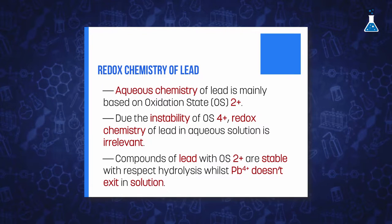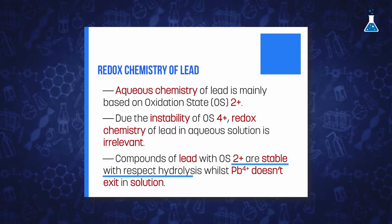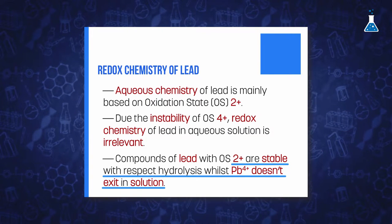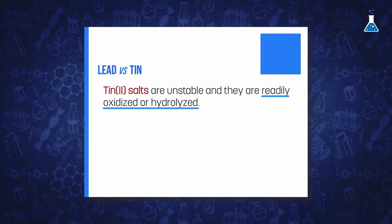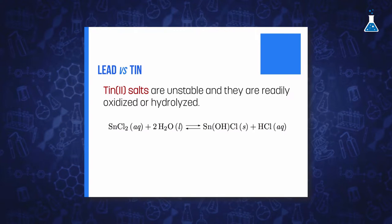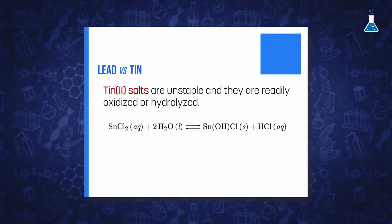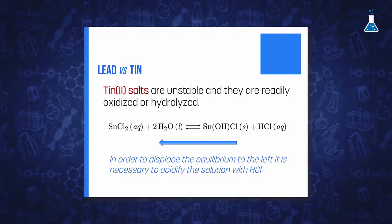Additionally, salts of lead in oxidation state 2+ are also stable with respect to hydrolysis, while the lead 4+ ion doesn't exist in solution. This behavior contrasts with the lower stability of tin-2 salts, which are readily oxidized or hydrolyzed to form different species, as shown in the equilibrium for tin dichloride. In order to maintain a clear solution of tin dichloride, it is necessary to acidify the solution with hydrochloric acid, which maintains the equilibrium toward the left-hand side, according to the well-known Le Chatelier principle.